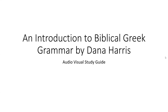This is an audio-visual study guide for Chapter 4 of Dana Harris's Introduction to Biblical Greek Grammar. At the end of Chapter 4, Harris lists concepts and skills you need to know in order to master the chapter. We're going to take that list and reverse engineer it and provide the notes from the textbook for those concepts. This is meant to be a review — if you come across something you don't understand, go back to the chapter and read it and look at examples.